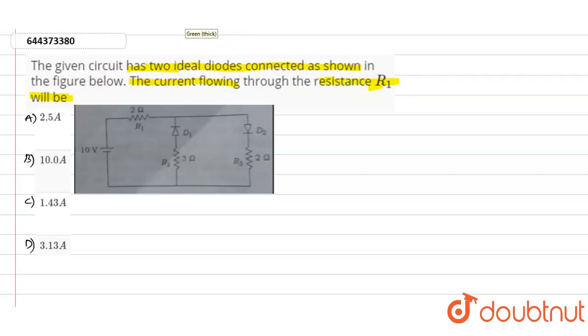current which is flowing through this particular R1. We have the value of R1 as 2 ohms in the circuit, and this entire circuit is supplied with 10 volts. We have diodes D1 and D2 which are parallel to each other, and R2 and R3 are parallel to each other with values 3 ohms and 2 ohms. If you look into this particular figure, this is the direction of the current I